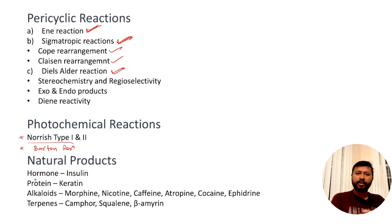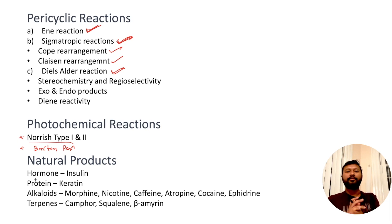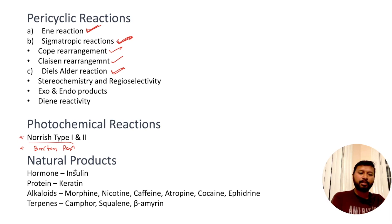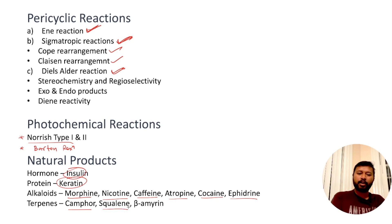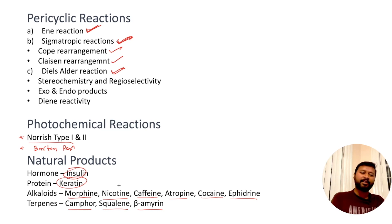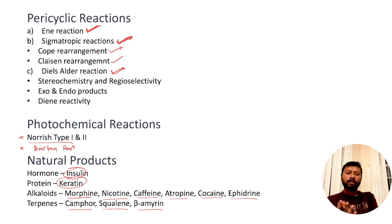Natural products is the last topic. Similar to bio-inorganic chemistry, you have to remember several things here. You should study hormones including insulin, proteins such as keratin, alkaloids including morphine, nicotine, caffeine, atropine, cocaine, and ephedrine. Terpenes including camphor, squalene, and beta-amyrin should also be covered. Even if you are not studying this topic in full, try to cover these before the exam so you have something in hand.